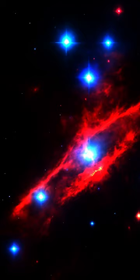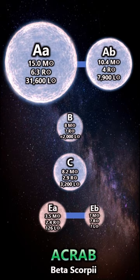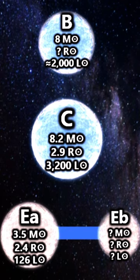Component B is comparatively dimmer and shines 20 times fainter than the primary pairing, and its precise spectral type remains unknown. C is another blue main-sequence star, while component Ea has a strangely distinct chemical composition and is possibly a Mercury-Manganese or HGMN star.